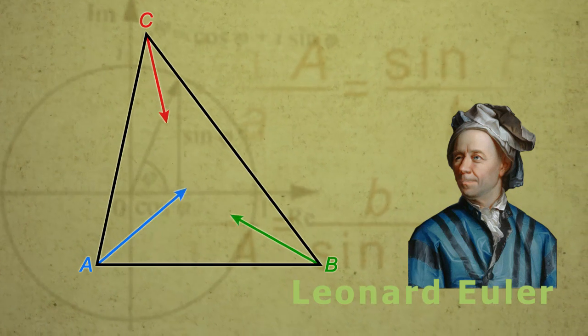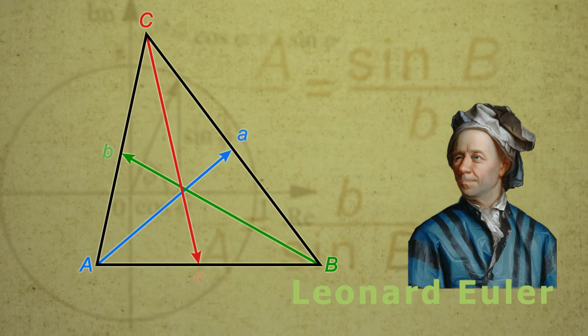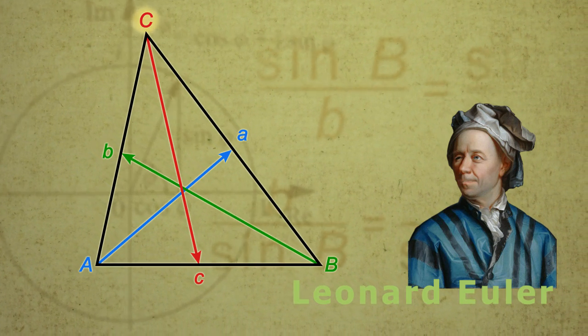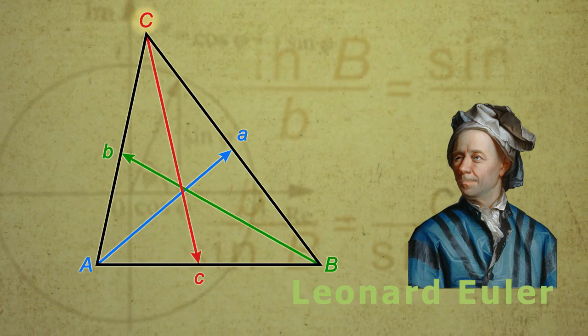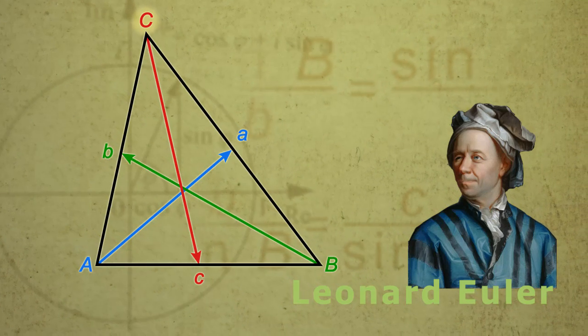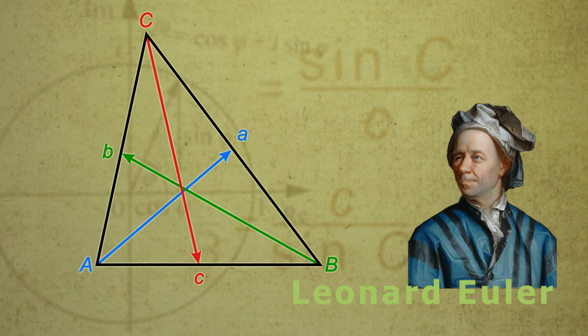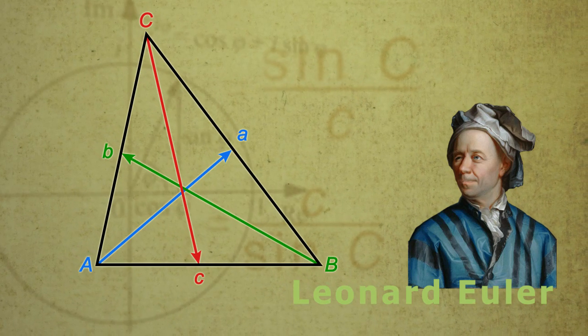The sides opposite the angles are marked in lowercase letters with the corresponding uppercase letter. For instance, angle C is marked in uppercase and the side opposite to it is marked in lowercase C. Naming conventions must be strictly followed to get correct results.